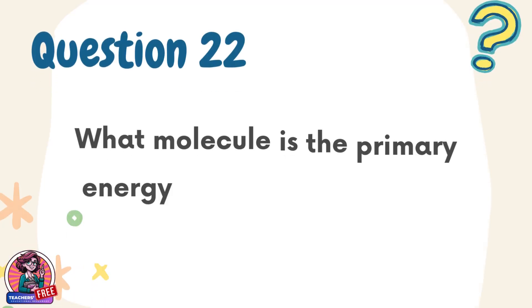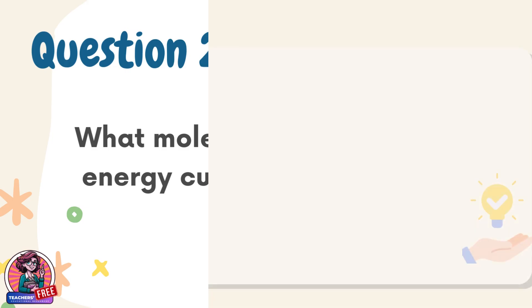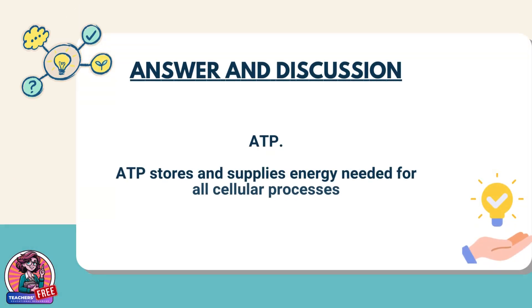Question 22. What molecule is the primary energy currency of the cell? Answer: ATP. ATP stores and supplies energy needed for all cellular processes.